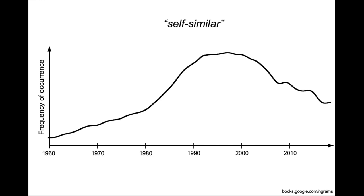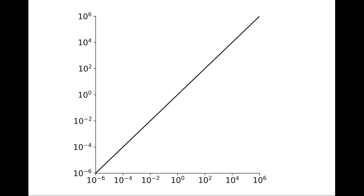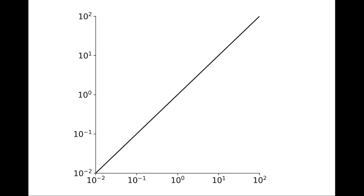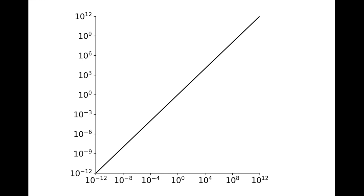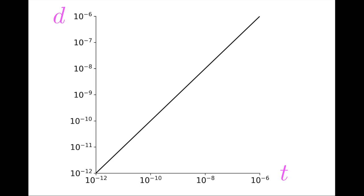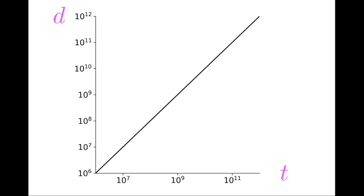The adjective self-similar is usually associated with fractals, so what does it have to do with the power laws we've been dealing with? Because whether we zoom in or zoom out, the curve looks the same — it has no characteristic scale. For instance, if what we are seeing is the kinematic plane from the canonical perspective, then the dynamics at very small length scales and short times are identical to the dynamics at long times and large length scales.